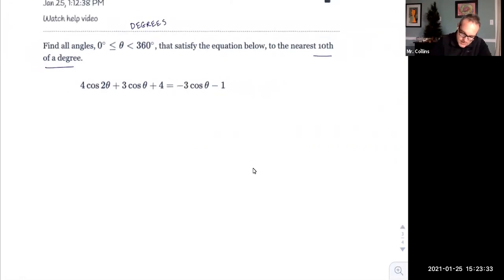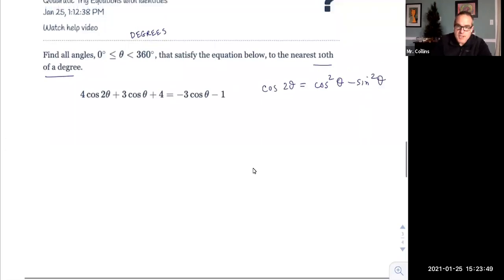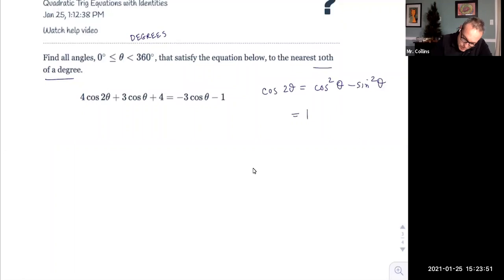So we got to get rid of cosine of two theta. Lucky for us, cosine of two theta, we have a trig identity for that. In fact, we got three of them, which hopefully you've memorized. If you didn't, I'll write them on the side. There's three versions of this. There's cosine squared minus sine squared, there's one minus two sine squared theta, and there's two cosine squared theta minus one.